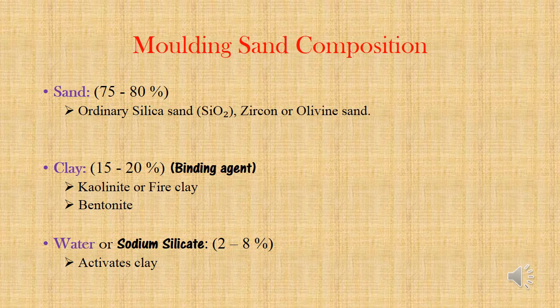Next is clay, which will act like a binding agent to the sand particles. It is used about 15 to 20 percent. And finally water, that is added 2 to 8 percent. The actual function of water here is activating the clay. In some cases water will be replaced by sodium silicate, which does the same function.